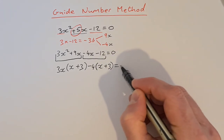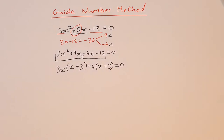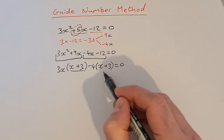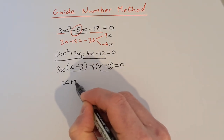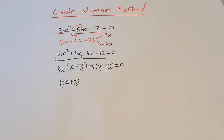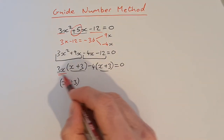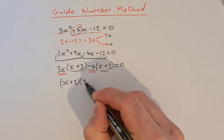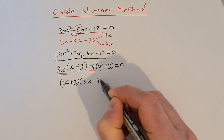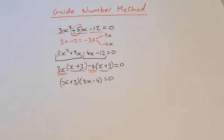It's important that you get the same thing in both sets of brackets. So what we do then is we write down what's in the brackets first: x plus 3. We write that down in one set of brackets, and then in the other set of brackets you write down the rest, which is 3x minus 4. And that's equal to zero.